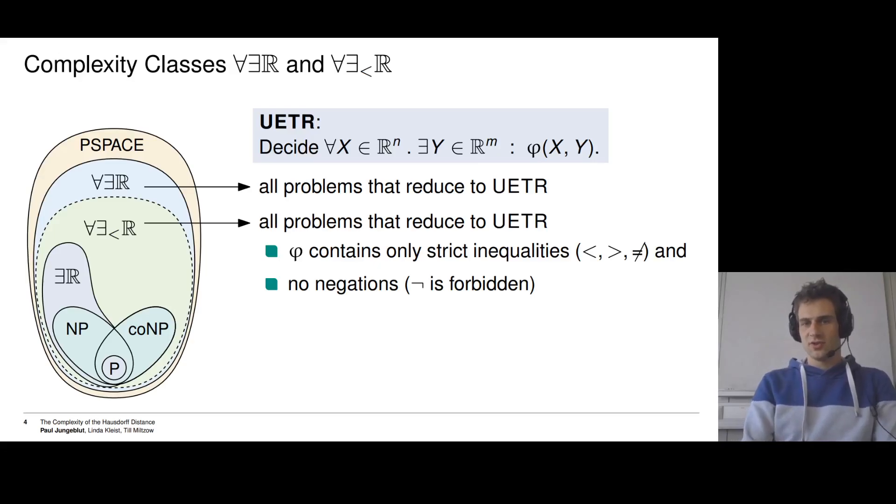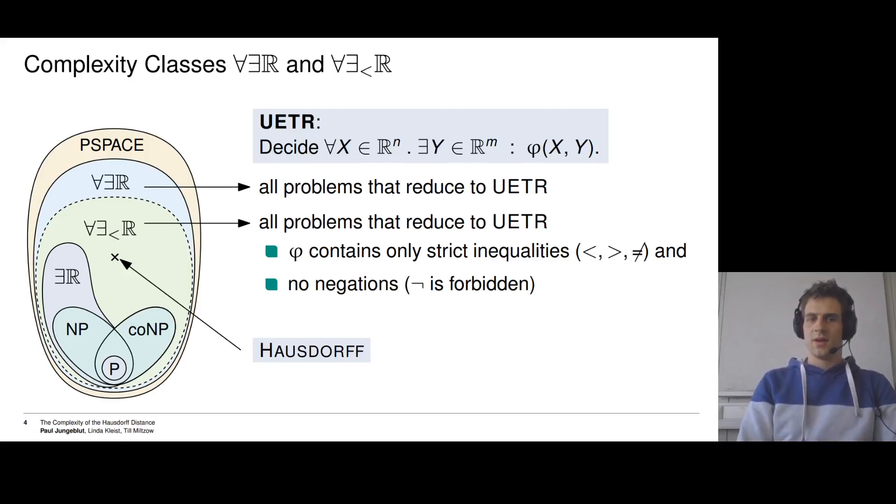And strict ∀∃ℝ is a subset of this class that contains all problems that reduce to UETR and have these additional restrictions on φ. Namely, φ may only contain strict inequalities, so strictly less, strictly greater, and not equal. It may not contain equal or greater than or equal. And it may also not contain any negations, because we could cheat with those. Negating a strictly less sign makes it a greater than or equal, which is forbidden. So again, we proved that Hausdorff is here in this hierarchy. It's in strict ∀∃ℝ, and it is also complete for this class.